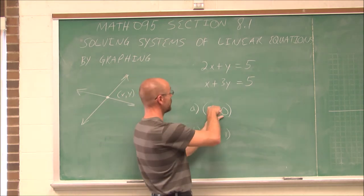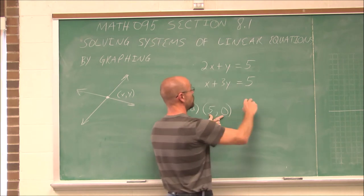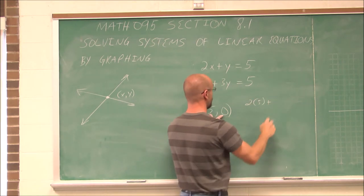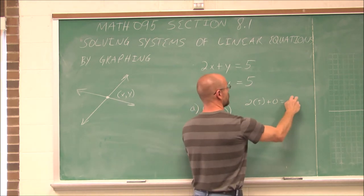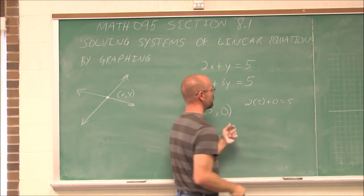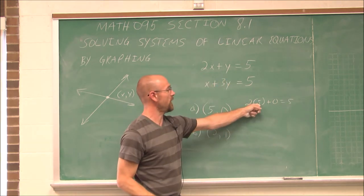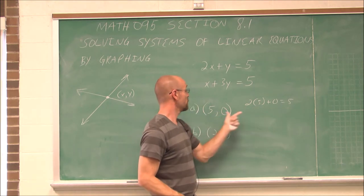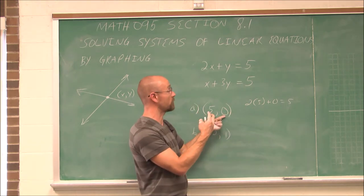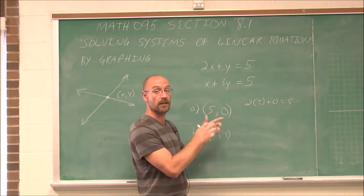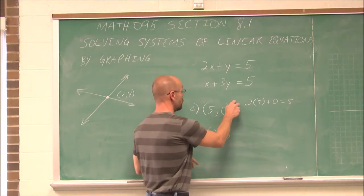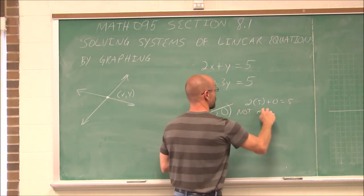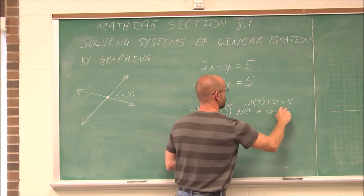So if I plug it in, 5 is my x value. So 2 times 5 plus y, which is 0, equals 5. Well, 2 times 5 is 10. 10 plus 0 is not equal to 5. So if this isn't true in any one of those equations, it is not the solution. So this is not a solution.